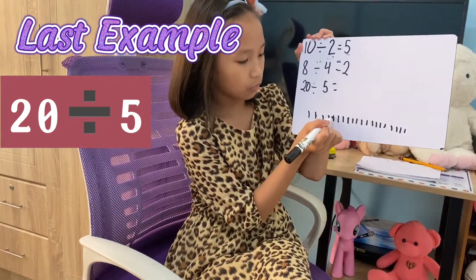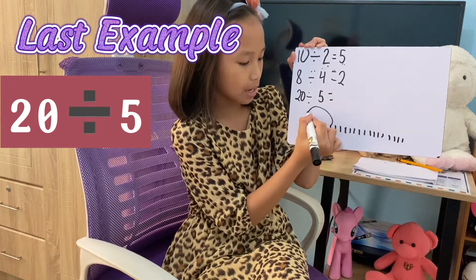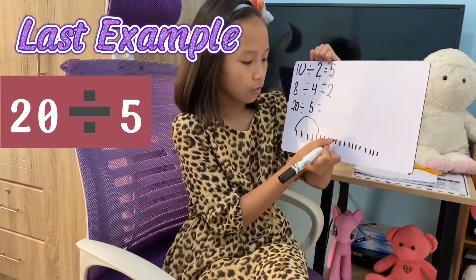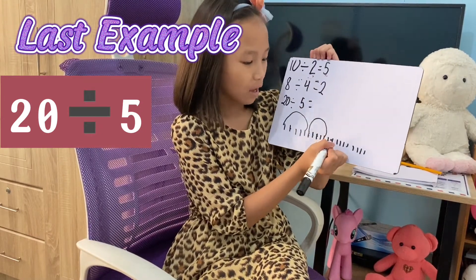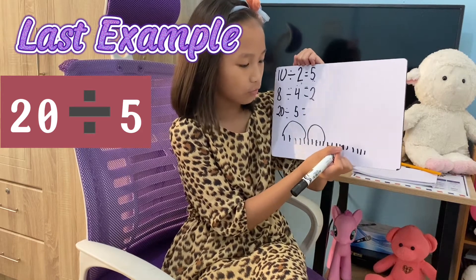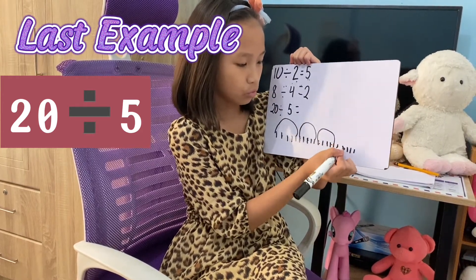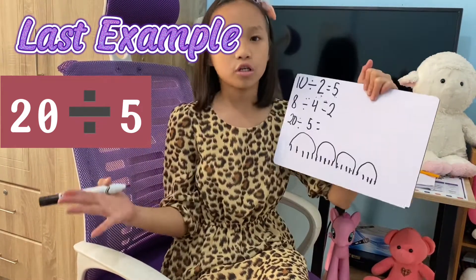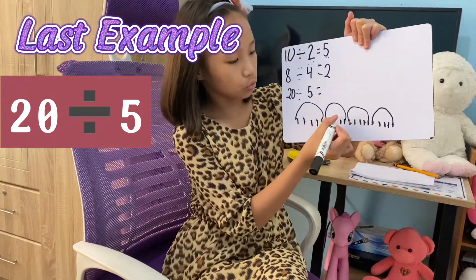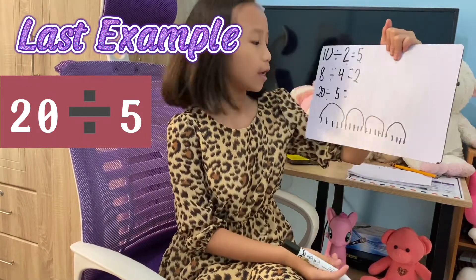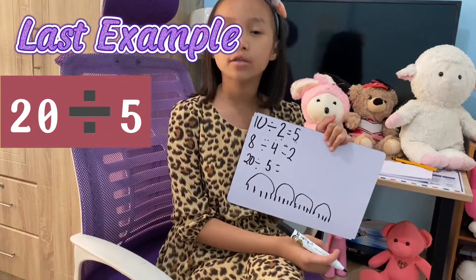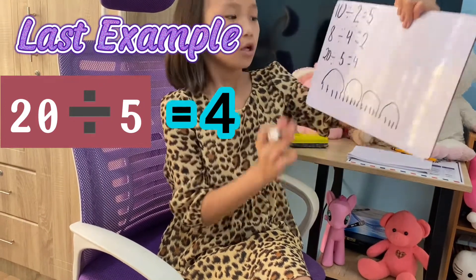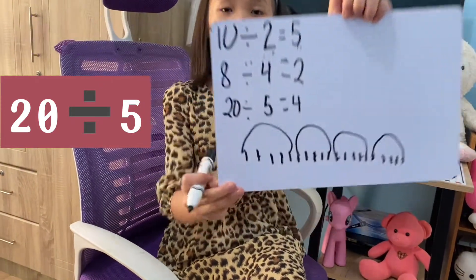We're going to count by 5 and make a circle: 1, 2, 3, 4, 5. Then the next group: 1, 2, 3, 4, 5. Then: 1, 2, 3, 4, 5. Then: 1, 2, 3, 4, 5. So let's count how many groups we have: 1, 2, 3, 4. So 20 divided by 5 equals 4. We're going to put the 4 — so this is the answer.